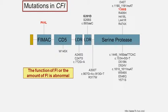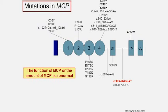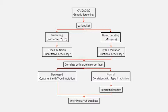These are some of the variants that are found in Factor I, Factor B, and MCP. I've given you an overview of the different mutations found in different genes.